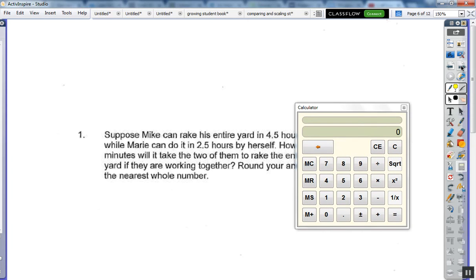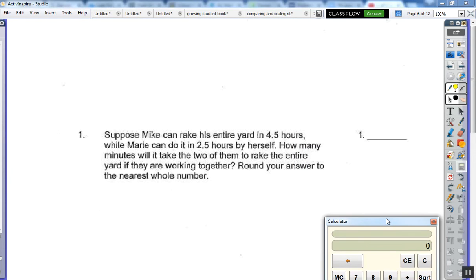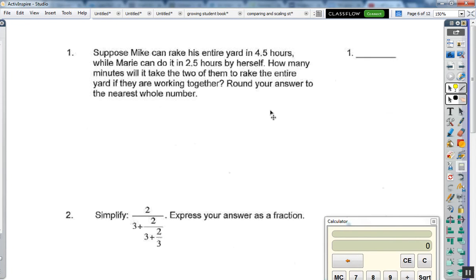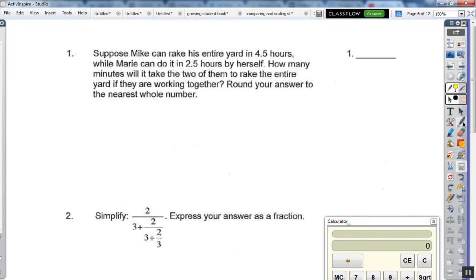Number one, everybody's favorite. Suppose Mike can rake his yard in 4.5 hours. Mike has a rate of, in other words, in one hour he can rake 1 over 4.5 of the yard.